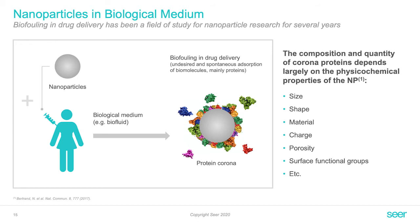Nanoparticles are, for example, used in drug delivery. And when nanoparticles are introduced into a complex biological matrix such as human plasma, they start to assemble proteins on their outer surface. This is called the protein corona. Proteins bind to the particles based on the physicochemical makeup of the particles and of the proteins themselves.